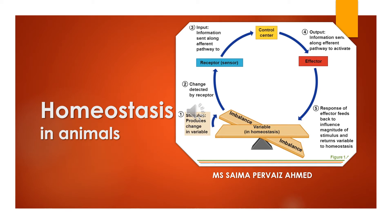Assalamu alaikum everyone, I'm Isaima Parvez Ahmed, and today I'm going to explain homeostasis in animals. I have already discussed homeostasis in plants in my last lecture. This is the zoology portion of your book from the same chapter. The word homeostasis arises from two words: 'homeo' meaning the place to live, and 'stasis' meaning to maintain. Homeostasis is the process to maintain the internal environment of a living organism.